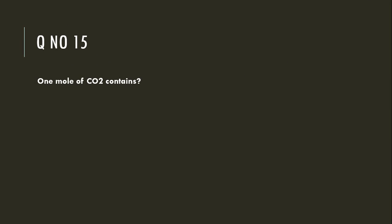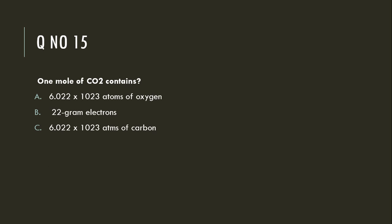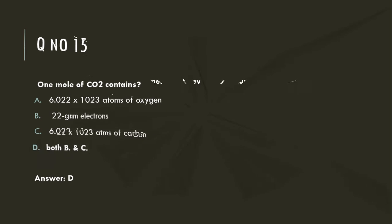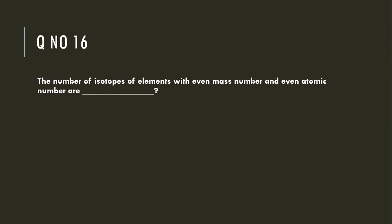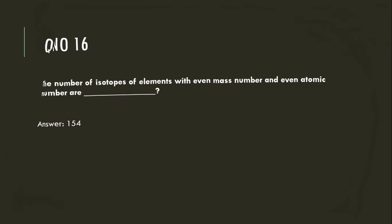One mole of carbon dioxide contains 6.022 × 10²³ atoms of oxygen, or 22 grams — both B and C are correct, so the right answer is both B and C. The number of isotopes of elements with even mass number and even atomic number is 154.